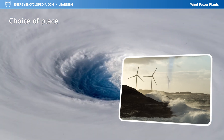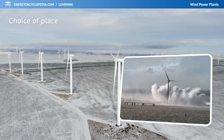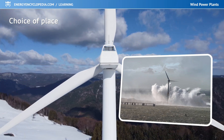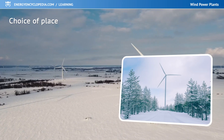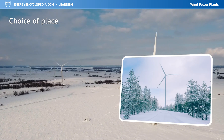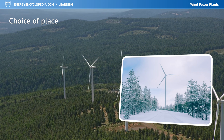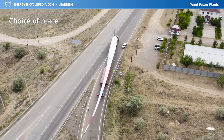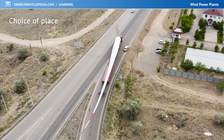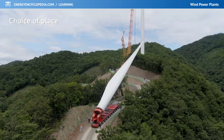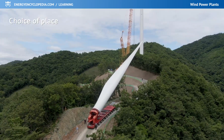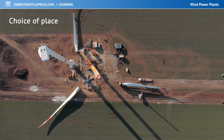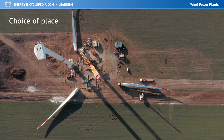Frequent hurricanes or prolonged freezing periods could endanger the plant. The wind farm should stand away from human settlements, but at the same time there must be the possibility to efficiently discharge the power output. As transport and installation of components is difficult, the selected location must also be sufficiently accessible.